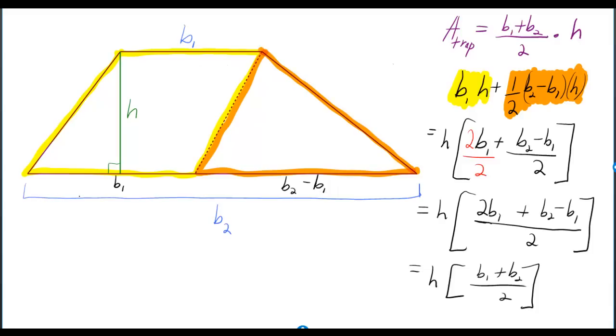Well, you would find out how much that extra bit is by subtracting base one from base two. And then it has the same height as our parallelogram, so we multiply by H and also by one half.